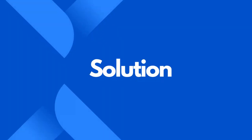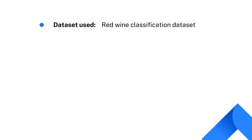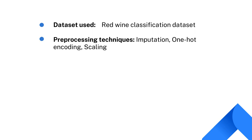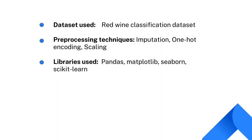At Coders Arts, we have implemented several solutions for this problem where we have used the red wine classification dataset, which is publicly available, and pre-processing techniques like imputation, one-hot encoding, and scaling. Libraries like pandas, matplotlib, seaborn, and scikit-learn were used for the purpose of visualization and model building.